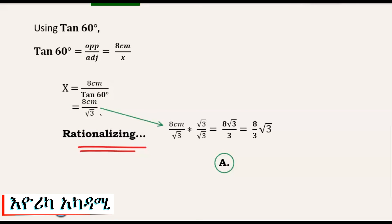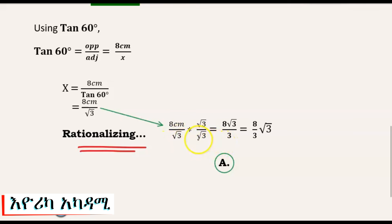To rationalize, we multiply the denominator by radical 3 over radical 3, which equals 1. So the denominator becomes radical 3 times radical 3 equals 3. Then x equals 8 over 3 radical 3. The value of x is 8 radical 3 over 3.